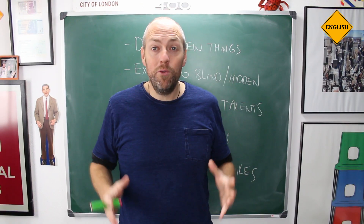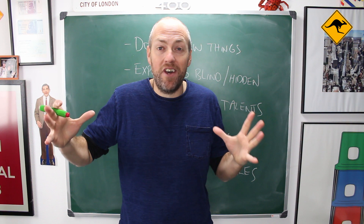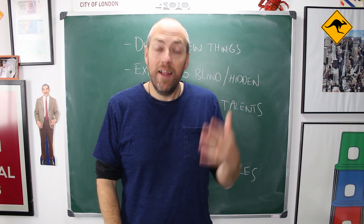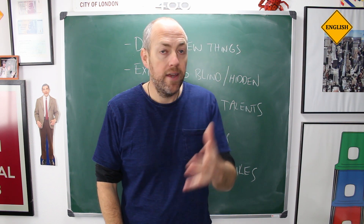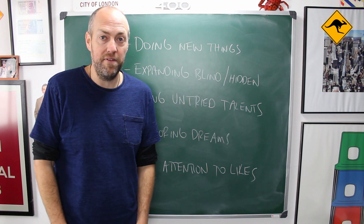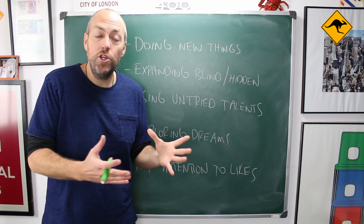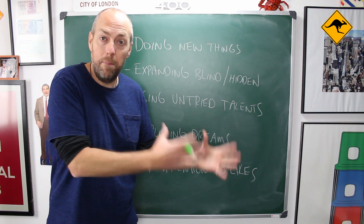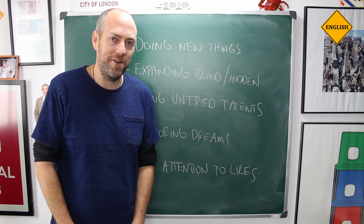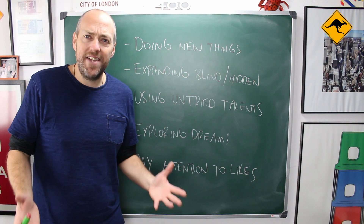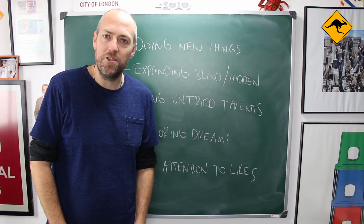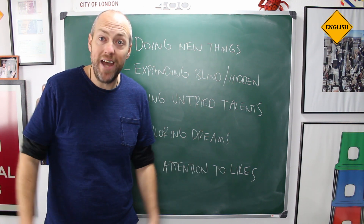If you want to be a good communicator, you need to expand the size of that first box — that open box. Luft and Ingham have five simple suggestions. The first one is to do new things — to try stuff that you've never done before. The second one is to increase the size of your blind and your hidden boxes, thereby reducing the things in the unknown box. Do you have untried talents — something you think you're good at? It's time to start trying it out and expanding your talent pool.